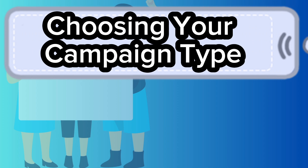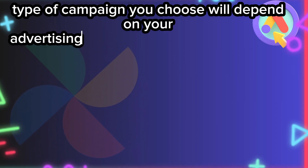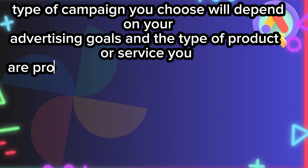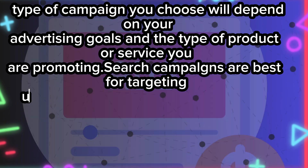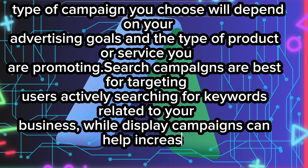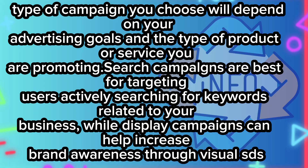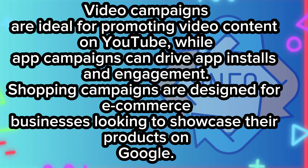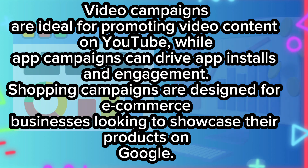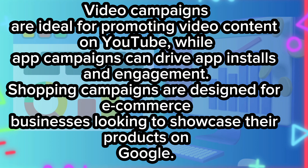Choosing your campaign type. The type of campaign you choose will depend on your advertising goals and the type of product or service you are promoting. Search campaigns are best for targeting users actively searching for keywords related to your business, while display campaigns can help increase brand awareness through visual ads. Video campaigns are ideal for promoting video content on YouTube, while app campaigns can drive app installs and engagement. Shopping campaigns are designed for e-commerce businesses looking to showcase their products on Google.